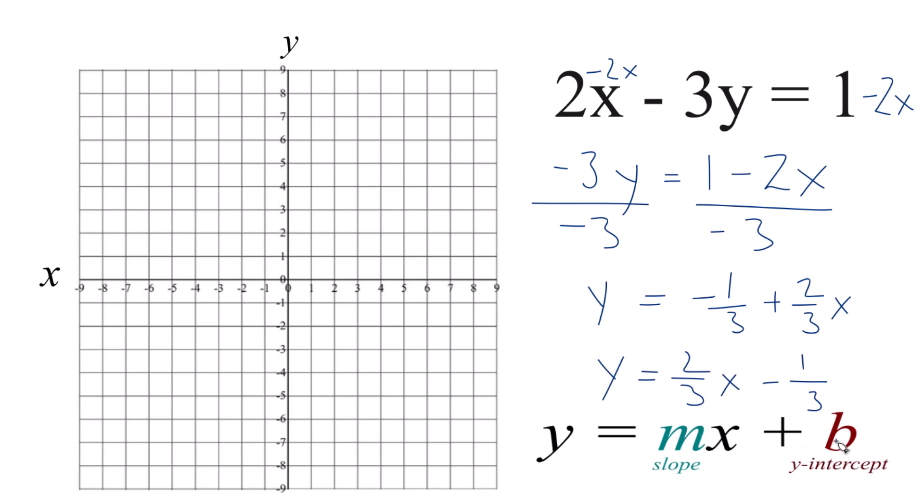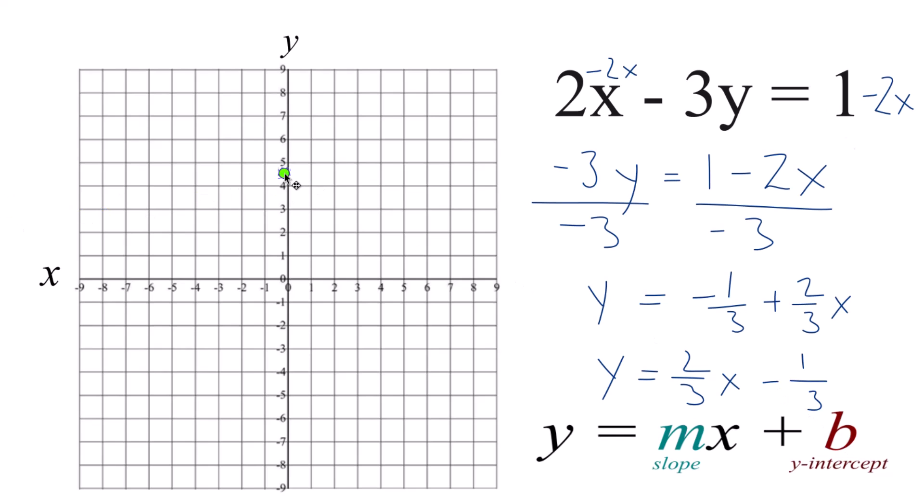So we have negative 1 third for b. That's the y-intercept, and that's where we're going to intercept the y-axis. So right about here.